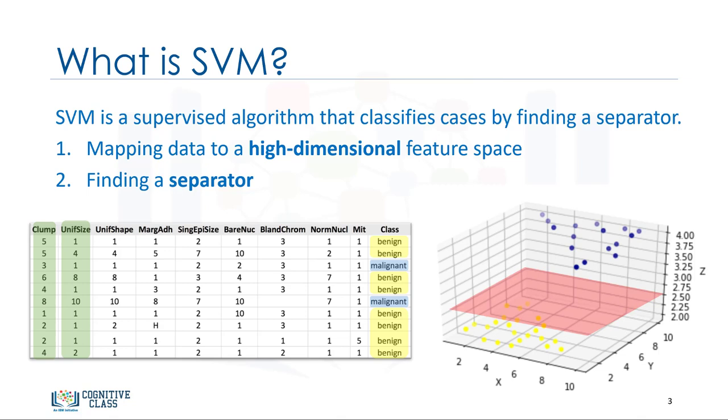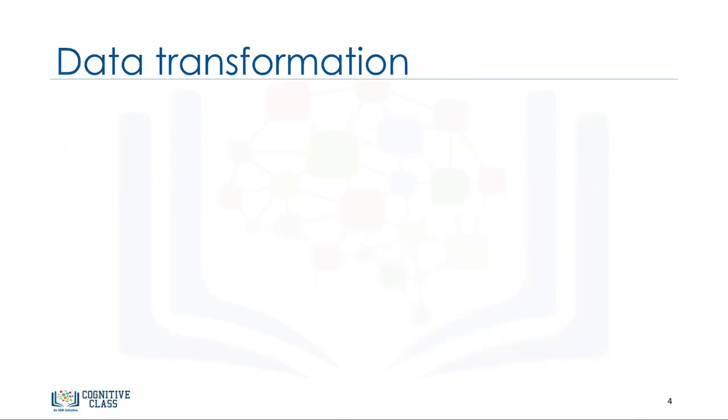Now, there are two challenging questions to consider. First, how do we transfer data in such a way that a separator could be drawn as a hyperplane? And two, how can we find the best or optimized hyperplane separator after transformation? Let's first look at transforming data to see how it works.